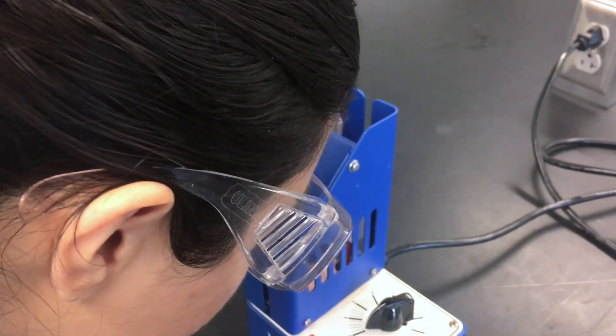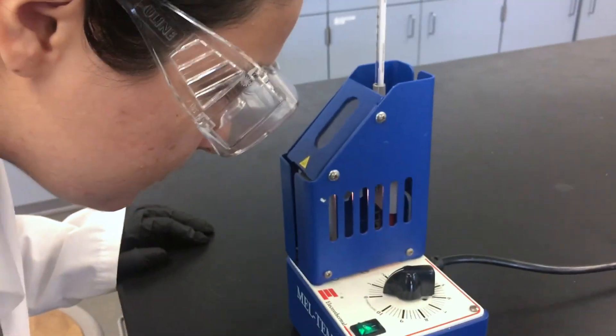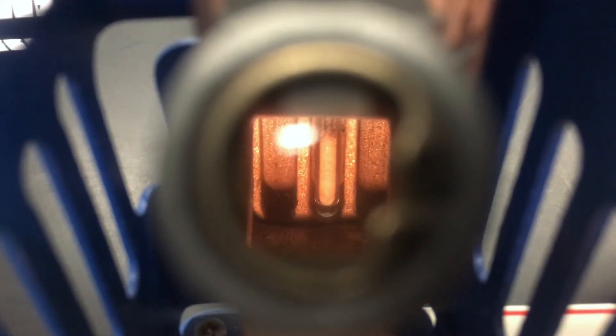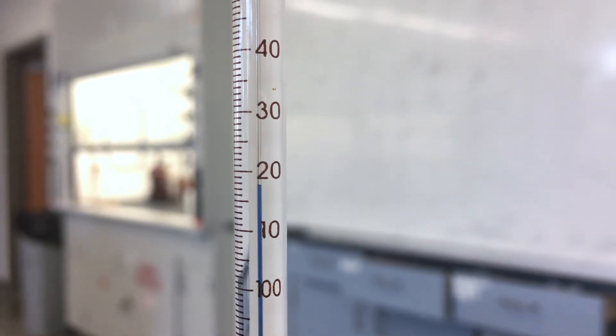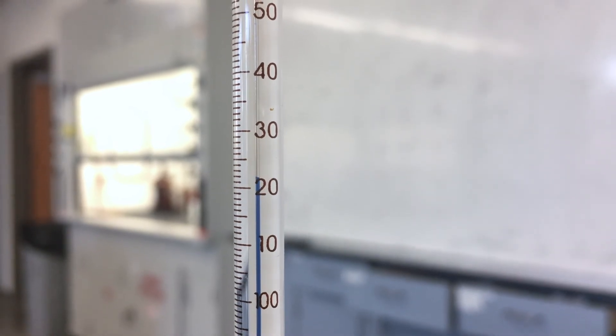As the device ramps the temperature up, take note of what temperature the thermometer reports when the substance begins to melt. This is the lower bound of the melting point range. When the substance has completely melted, take note of the temperature again. This is the higher bound of the melting point range.